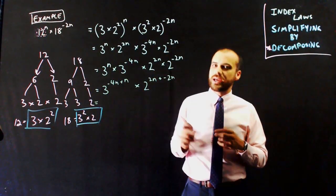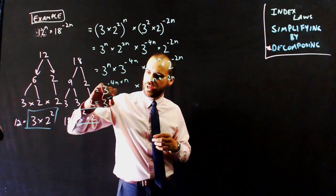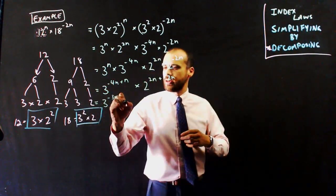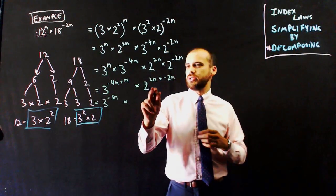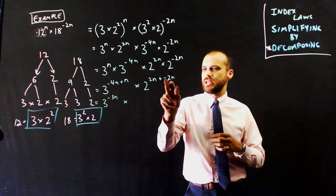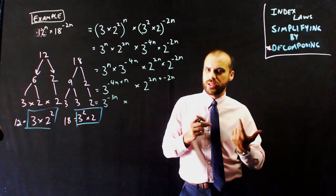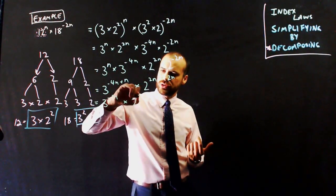Alright, 3 to the negative 4n plus n is going to be 3 to the negative 3n. And I'm multiplying it by 2 to the 2n plus negative 2n. So 2n minus 2n is 0, 2 to the 0.